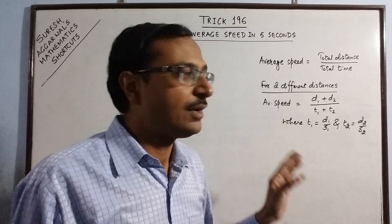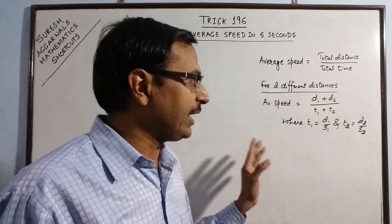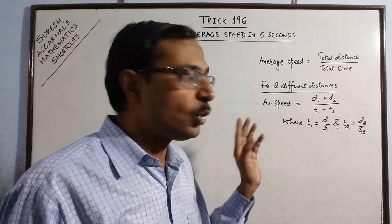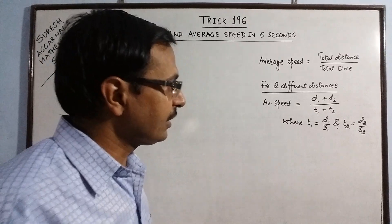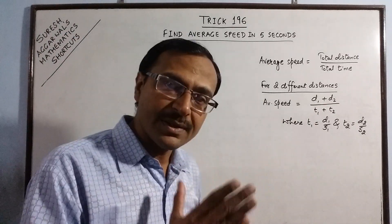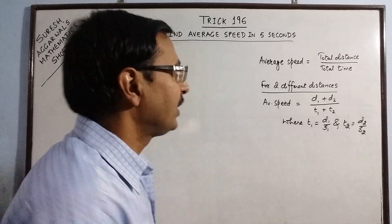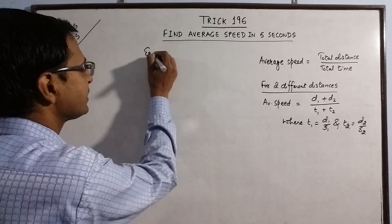Now, this is the traditional method of finding the average speed for two different distances. Now, I am taking one example wherein the distance covered is the same.